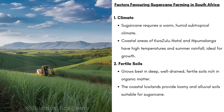Heat and moisture are going to help the sugarcane grow tall and strong. Sugarcane grows best in deep, well-drained, fertile soils rich in organic matter. If the soil is too shallow, the roots won't be able to develop properly. The coastal lowlands provide loamy and alluvial soils suitable for sugarcane. Loamy soil is a mix of sand, silt, and clay — it's very soft, which makes it easy for the roots to grow.